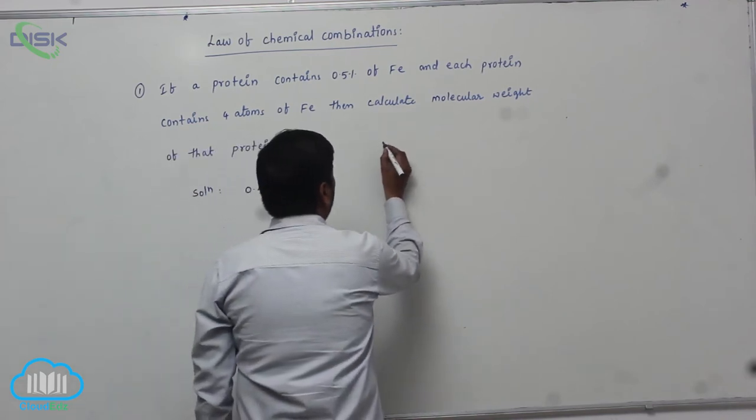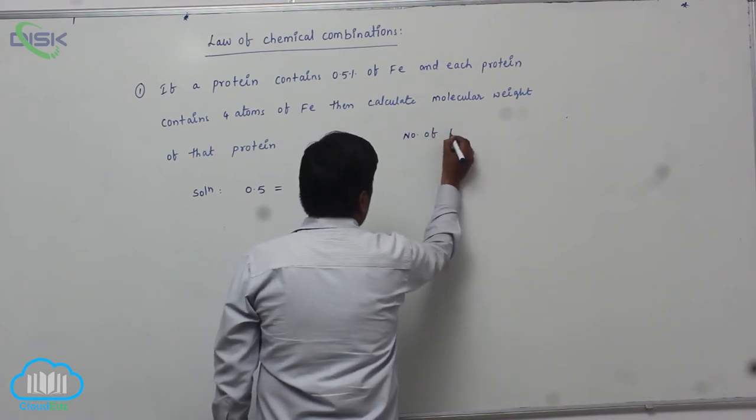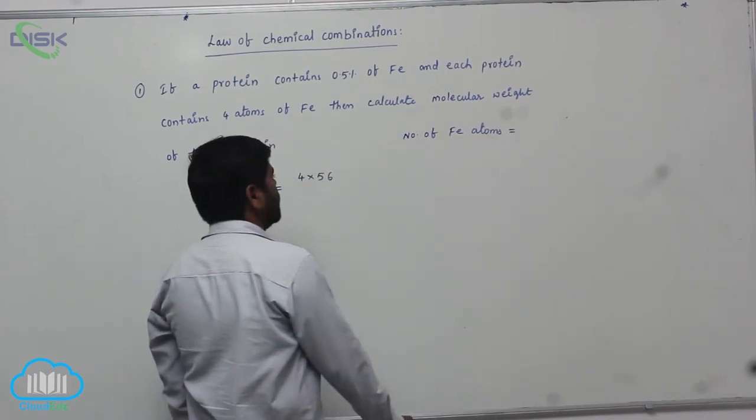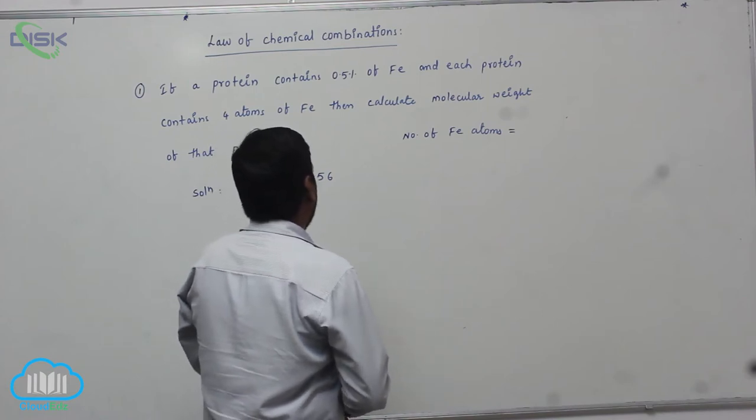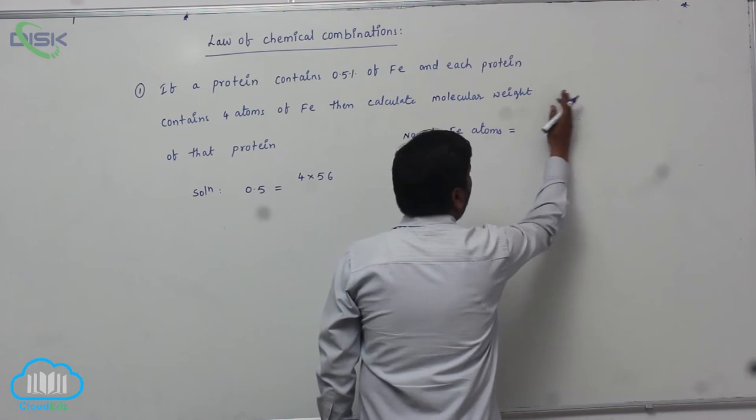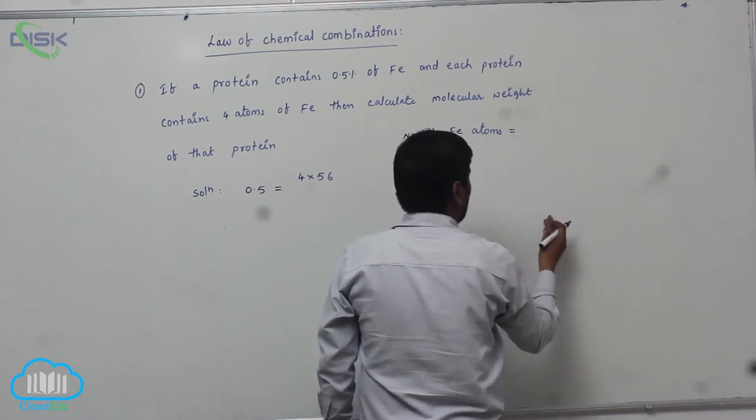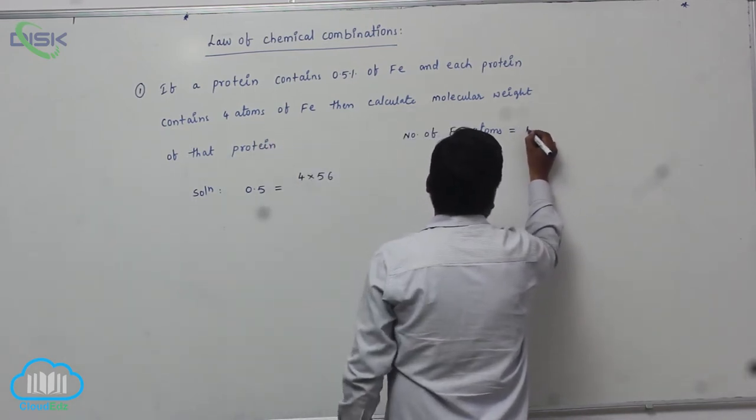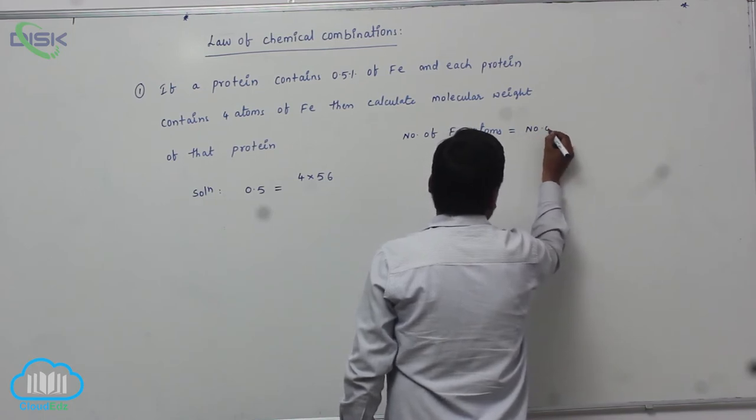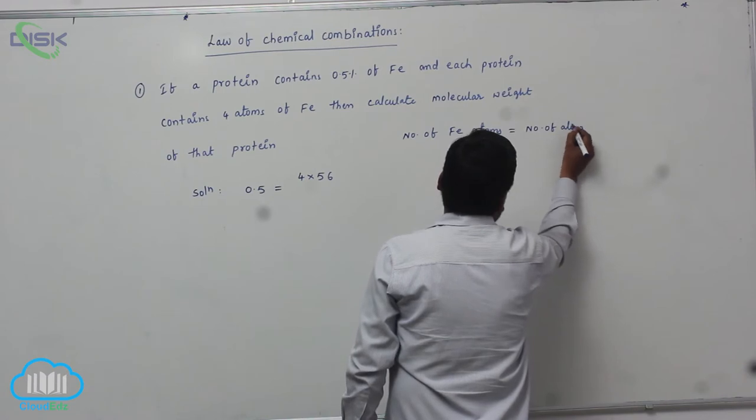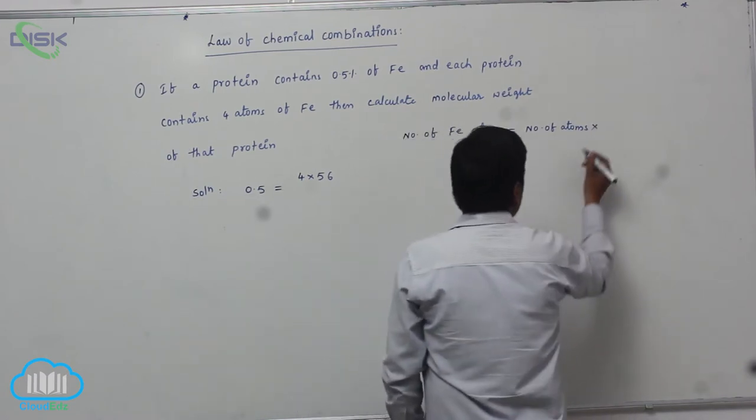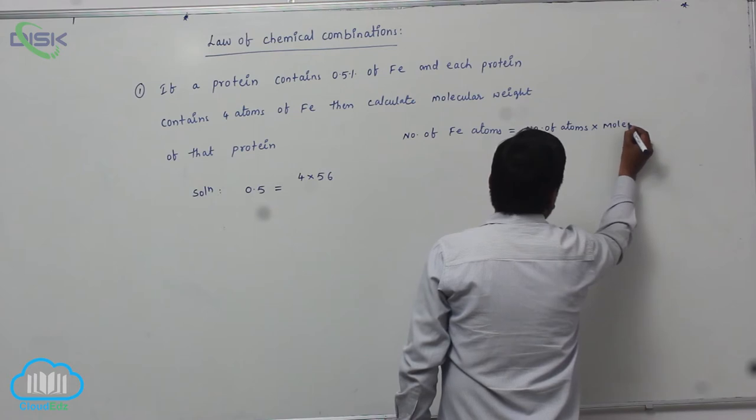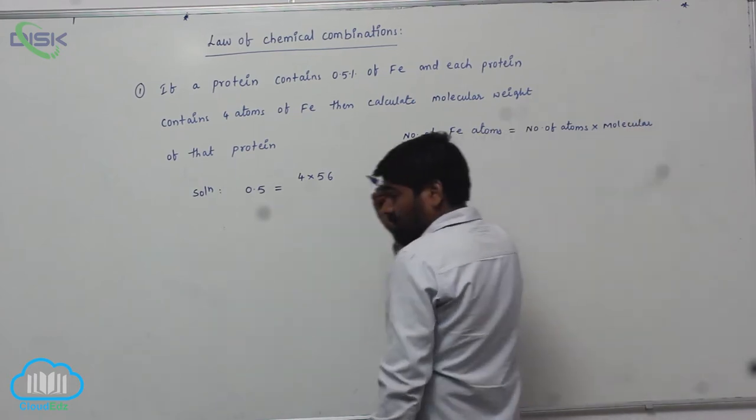Number of iron atoms equals to number of gram atoms. Number of atoms into molecular mass - molecular mass or atomic mass of iron.